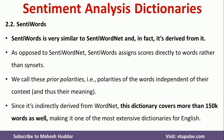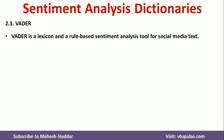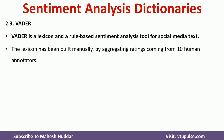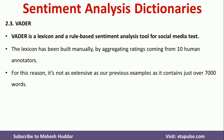The third dictionary is VADER. VADER is a lexicon and rule-based sentiment analysis tool designed for social media sentiment analysis. The lexicon has been built manually by aggregating ratings from 10 human annotators. Because it was built manually, it contains around 7,000 words — unlike the 150,000+ words in the other dictionaries.